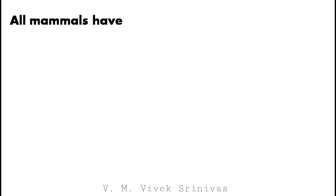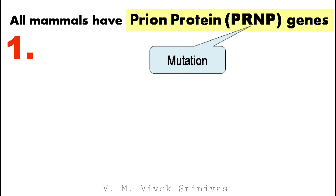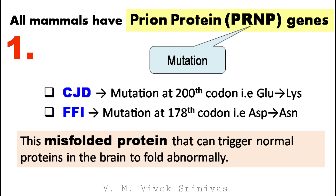How do you get prions? All mammals appear to have prion protein genes. But mutation of this prion protein gene may lead to a misfolded protein — that is, an abnormally folded protein. This abnormal protein can trigger other normal proteins in the brain to fold abnormally. In CJ disease, mutation at the 200th codon causes this abnormally folded protein. In fatal familial insomnia, mutation at the 178th codon causes this abnormally folded protein.